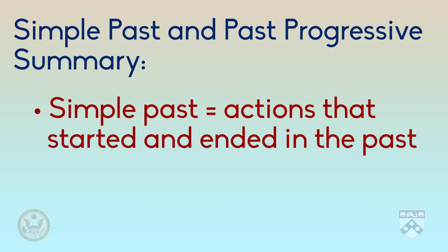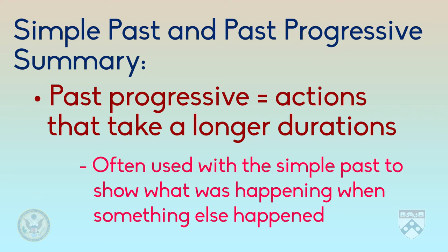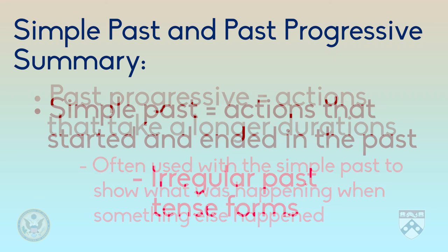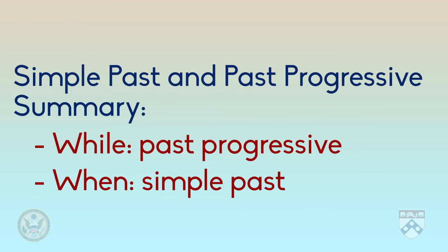To summarize, we've talked about the simple past and the past progressive. We've talked about how actions that start and end in the past use both forms. Use the past progressive to show what was happening when something else happened. Use the simple past if you are just talking about one event that began and ended in the past. Also, remember to study those irregular forms. Lastly, we talked about how to use both forms together while using either 'while' or 'when.' Check your understanding of this concept with the next game, and check the bonus materials for a game using irregular past tense verbs.